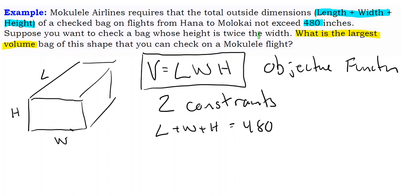Well, the other one is the bag whose height is twice the width. The height is twice the width. So the height is equal to two times W. And there is another constraint.